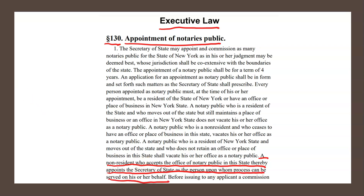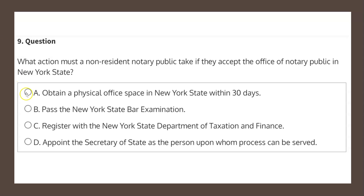So with this in mind, let's have a look at our four choices to determine the solution. Choice A states: obtain a physical office space in New York State within 30 days. This is not what the law requires and therefore choice A is not the correct solution.